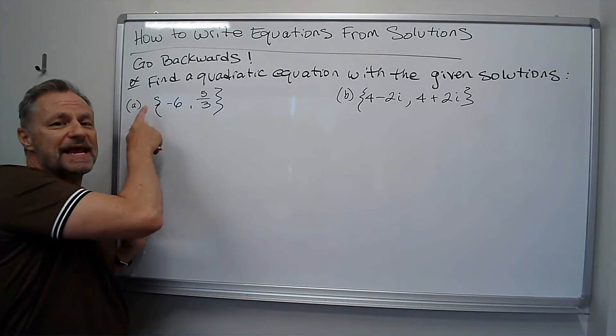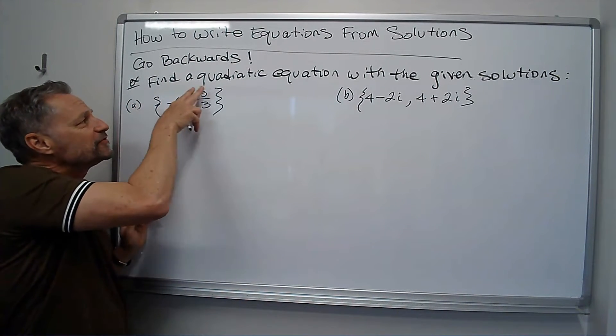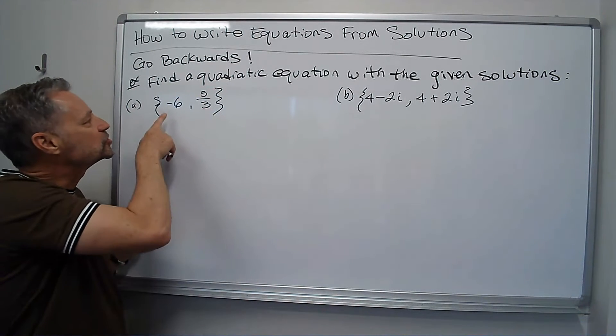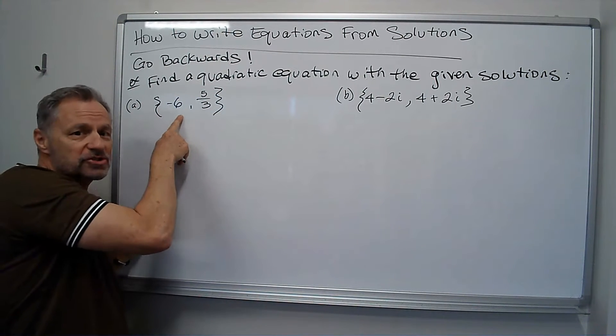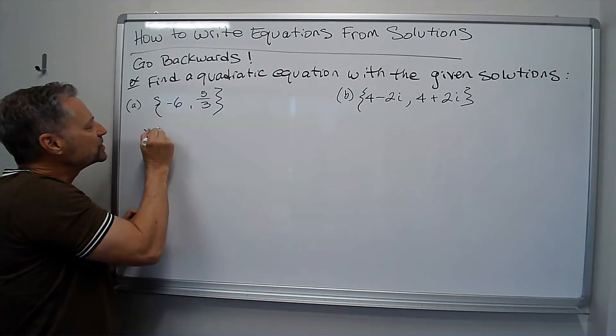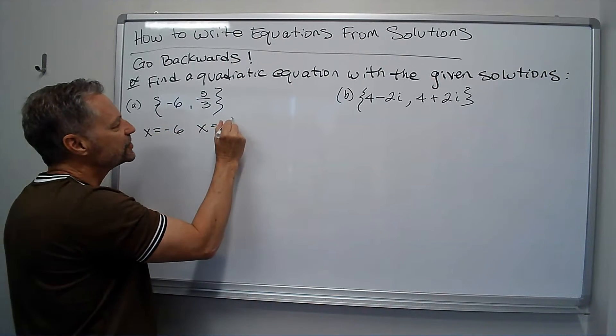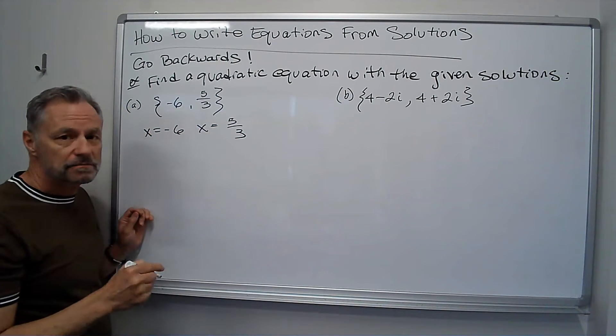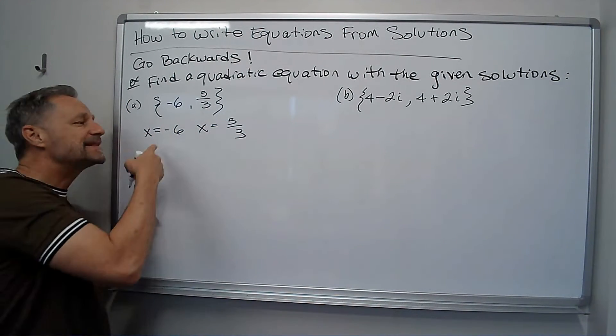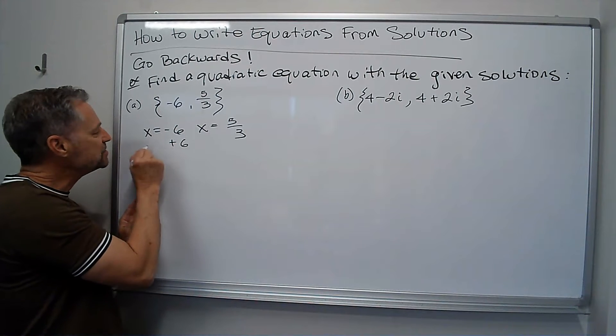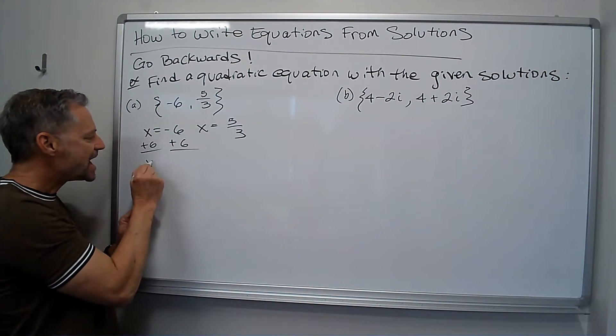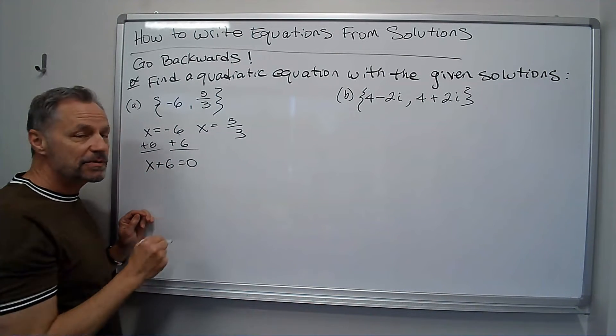So we have a problem that says find a quadratic equation with the given solutions. The first one, the solutions are negative six and five thirds. So essentially x was negative six and x was five thirds. Well, where did that come from? If I add six to both sides, I had to have x plus six equals zero as one of my factors.